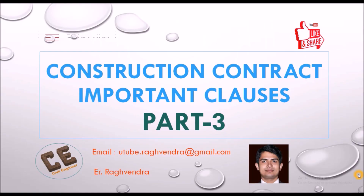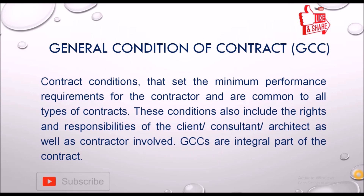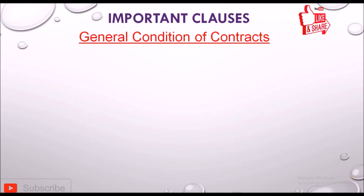First I am going to explain the General Condition of Contract (GCC). These are conditions that set the minimum performance requirements for the contractor and are common to all types of contracts. These conditions also include the rights of the contractor. GCCs are an integral part of the contract. Now let's start with the important clauses of the general condition.